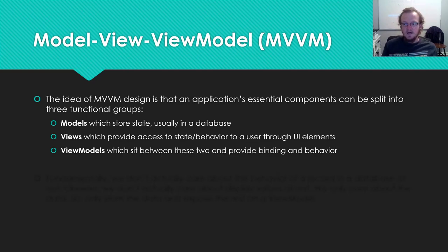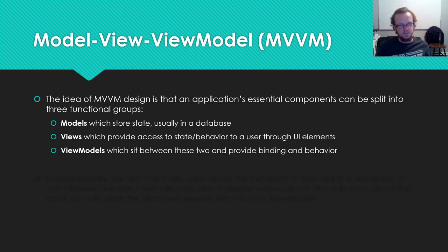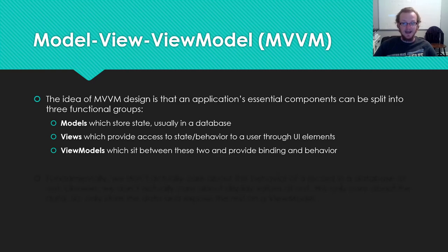On the complete opposite end, you have views, which provide the user access to state or short-lived behavior through some type of UI element. If models are far from the user — stored in some hosted database — views are exactly next to the user. The view is the thing with the button, a slider, or some control that allows the user to interact with data presented by models.